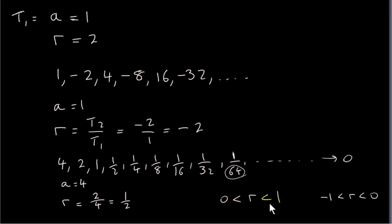So if r lies between 0 and 1, or r lies between minus 1 and 0, the series will actually converge. We can actually combine these two ranges here and say that r lies between minus 1 and plus 1. We can just combine these two into a single range. I'll discuss more about this later.